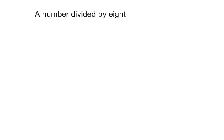First, let's take a look at what this is asking us for. A number - that's our unknown, so that's a variable. Let's use x. The operation divided, and the number is 8. So we could say x divided by 8 is our variable expression.